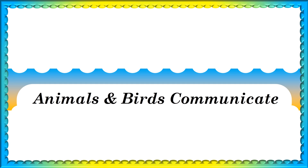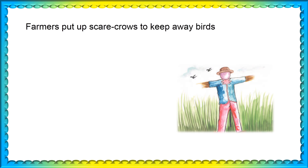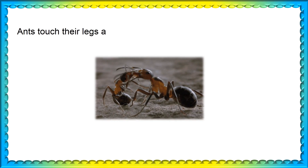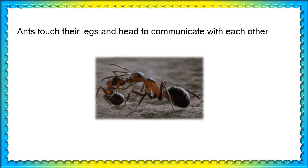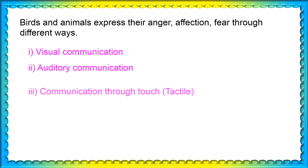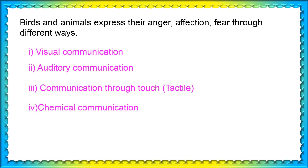Now let us discuss how animals and birds communicate with each other. Farmers put up scarecrows to keep birds away from picking the grains — birds assume them to be human beings on guard, which is also a kind of communication for birds. Birds and animals express their anger, affection, and fear through different ways: visual communication, auditory communication, communication through touch, and chemical communication.